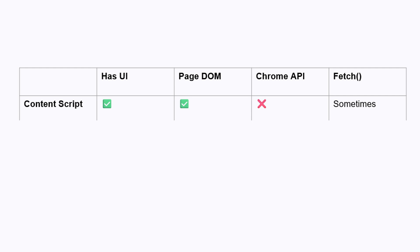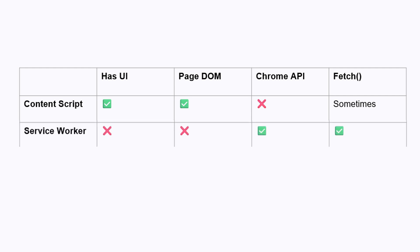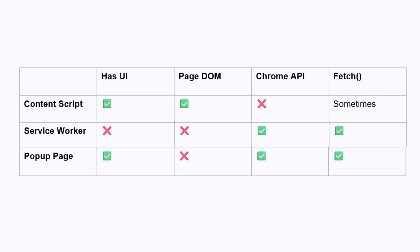To summarize this information in a table: the content script has a UI, it can access the page DOM, it cannot access the Chrome API, and it may or may not be able to fetch depending on the page content security policy. The service worker is able to access the Chrome API and fetch things, but it does not have a UI and it cannot access the page DOM. Finally, the pop-up page has a UI and can access the Chrome API and fetch things, but it cannot access the page DOM and it can only be opened with a user action. So the basic pattern is every part of the Chrome extension has permission to some things, but there is no component that has all the permissions you need. So Chrome extensions need to manage a lot of message passing to get the data where it is needed.